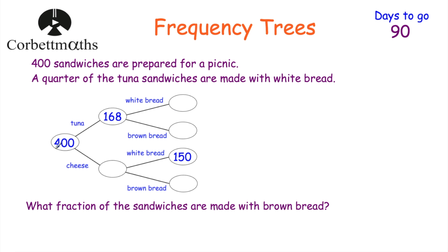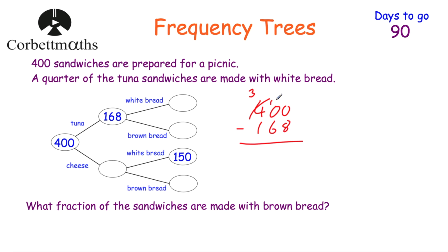So we've got the frequency tree - we know there are 400 sandwiches altogether and 168 are tuna sandwiches. Let's work out how many cheese sandwiches there are: 400 take away 168. We need to borrow, so that becomes 10 take away 8 is 2, 9 take away 6 is 3, and 3 take away 1 is 2. That means there are 232 cheese sandwiches.